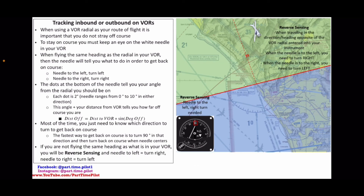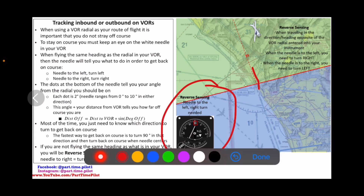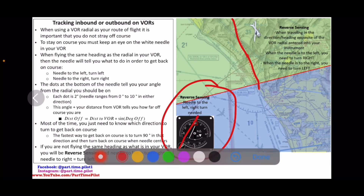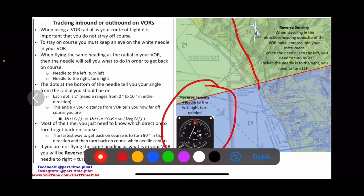Finally, if you're not flying the same heading as what's set in your VOR, you'll have reverse sensing. I've mentioned this multiple times, but I want to visualize it for you. In this case, a needle to the left wouldn't mean turn left — it would mean turn right. And a needle to the right would mean turn left. In this example, we have a 330 indication and our needle is to the left. Because we're not pointed at 330 — we're actually pointed in the opposite direction — we have reverse sensing. So this needle to the left doesn't mean turn left. If we turned left, we'd go further off course. We have to turn right to get back on the radial.